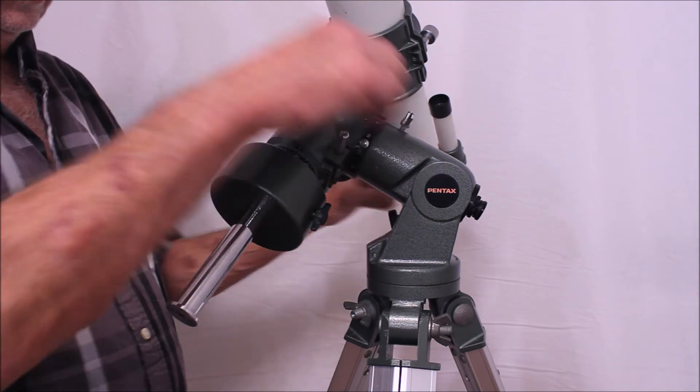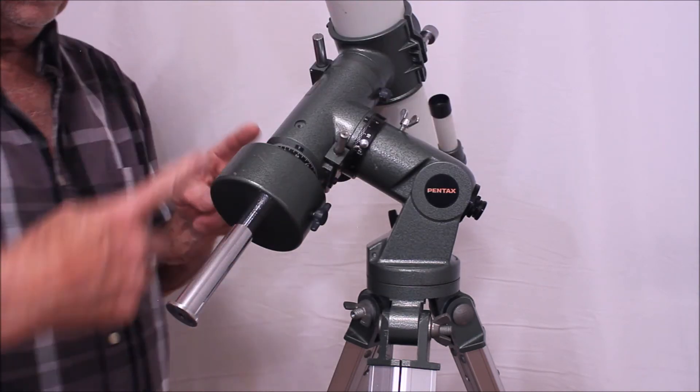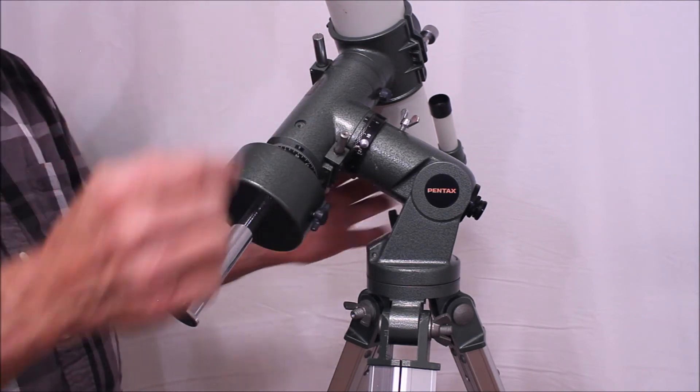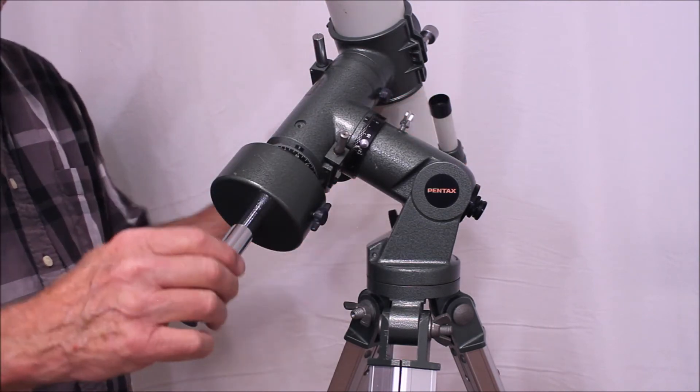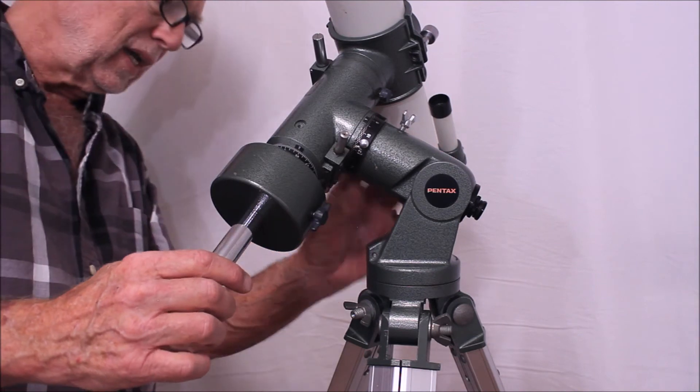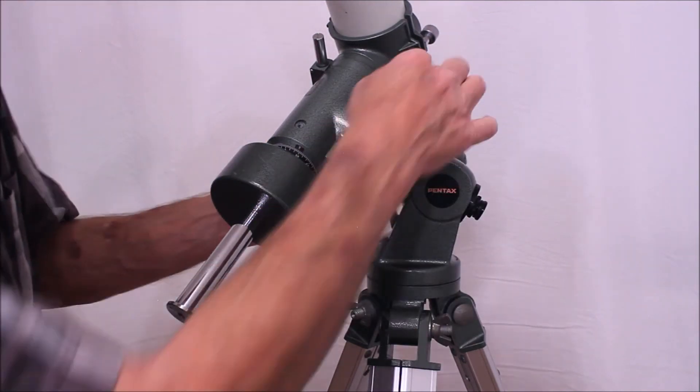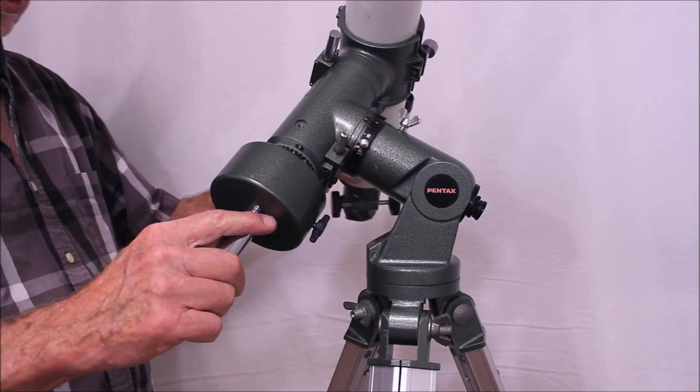So there's an objective inside there. But the counterweight shaft actually goes through here. And the counterweight shaft is cross drilled. So that if you move it into the right position.